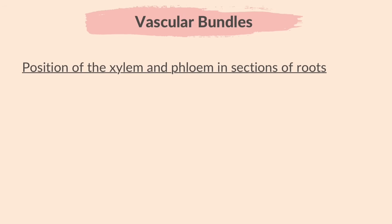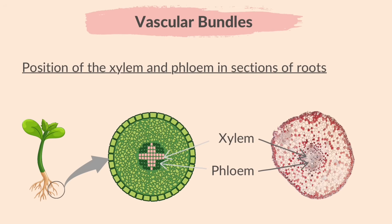Let's first learn the position of the xylem and phloem in sections of roots. In the diagram, the pink area in the shape of an X is the xylem tissue, and the surrounding green area is where the phloem tissues are located. If you look closely at the real image on the right, you will notice the inner xylem area and the outer phloem area. Just remember: the xylem is always on the inside and the phloem is always on the outside.